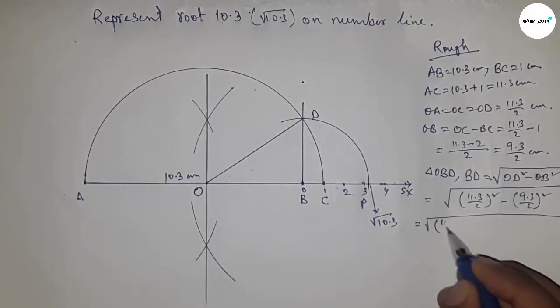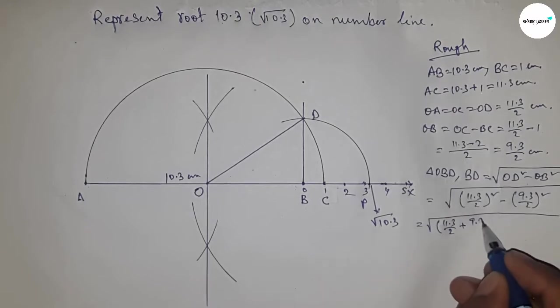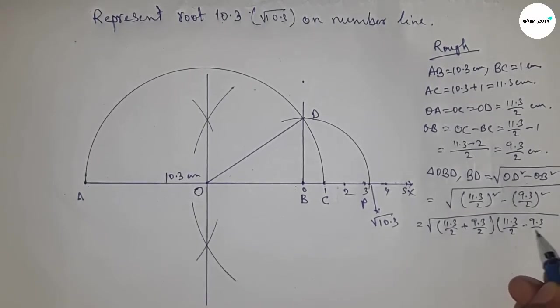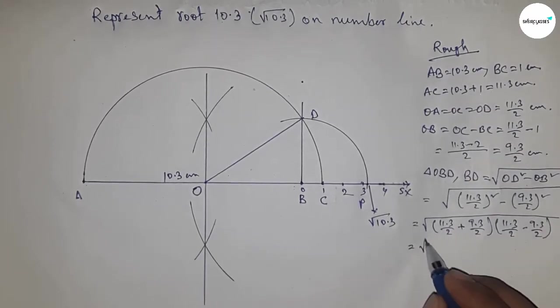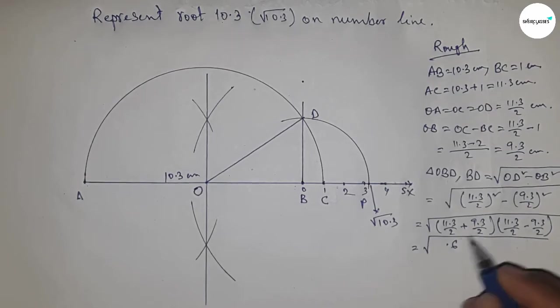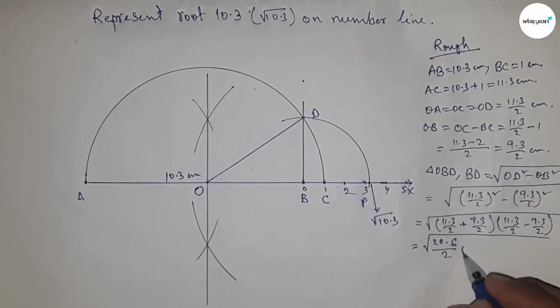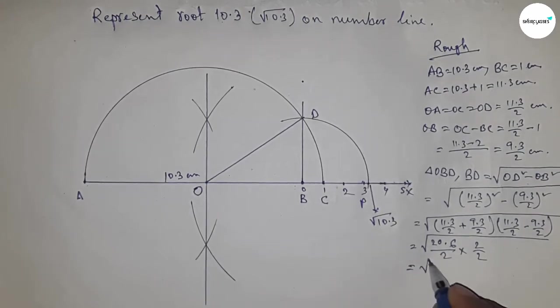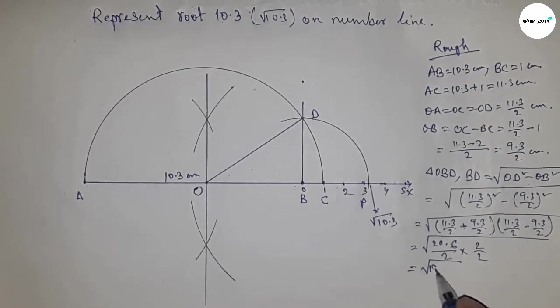So here applying the formula. And from this, this is 20.6 by 2 into 2 by 2, so this is root 10.3 into 1, so this is root 10.3 centimeters.